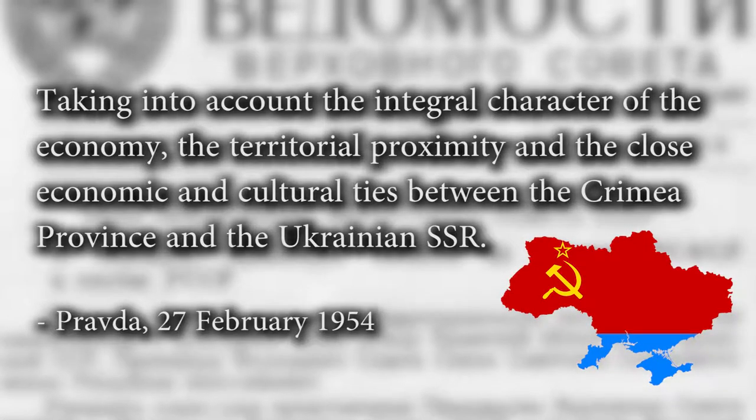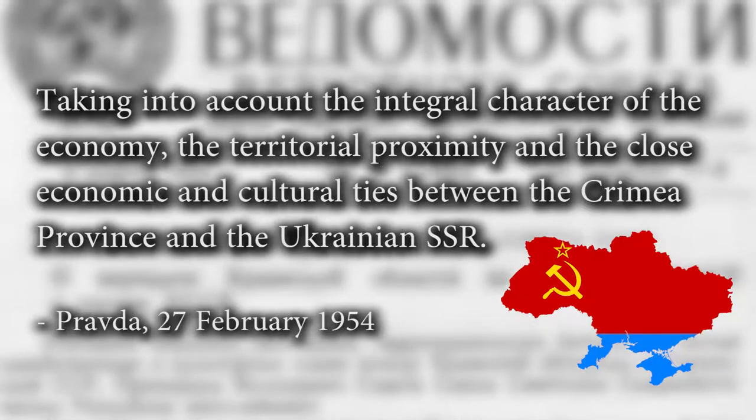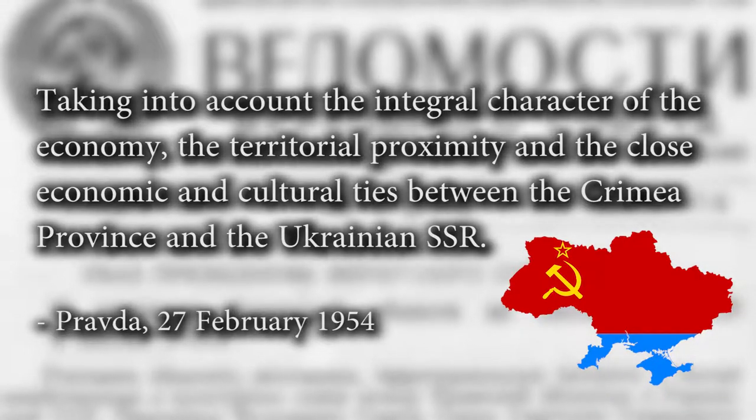Then 1954: the Crimean Oblast is transferred to the Ukrainian SSR. Bear in mind that all of these territories were still just part of the Soviet Union, which was a highly centralized state. It was more of a symbolic gesture because of the 300th anniversary of the Tsardom in Russia. As Soviet newspaper Pravda wrote, it was done taking into account the integral character of the economy, the territorial proximity, and the close economic and cultural ties between the Crimean province and the Ukrainian SSR. Other sources say that Soviet leader Nikita Khrushchev was drunk at the moment when he decided to transfer Crimea. In any case, it led to problems later down the road.